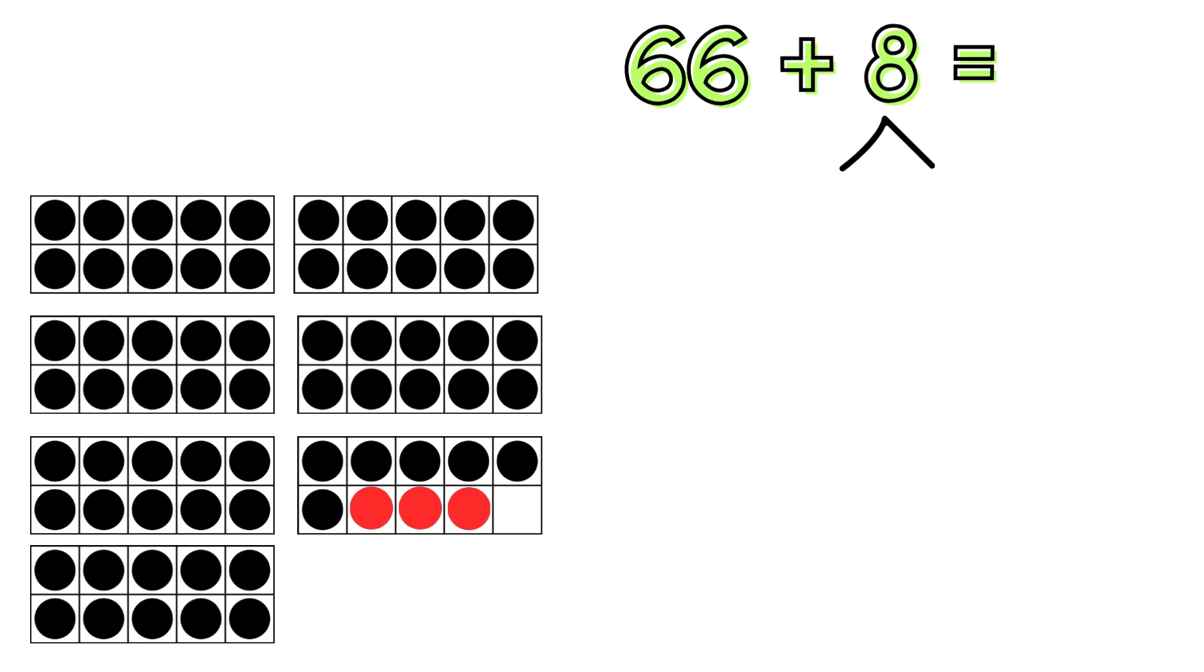1, 2, 3, 4, 5, 6, 7, 8. To fill the 10 frame, I added 4 chips in the frame and 4 outside. So I broke up 8 into 4 and 4. I'll show this in my number bond.